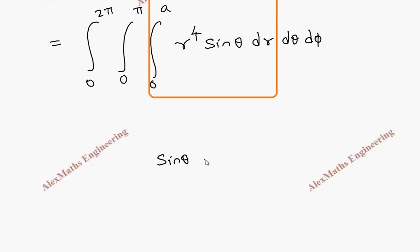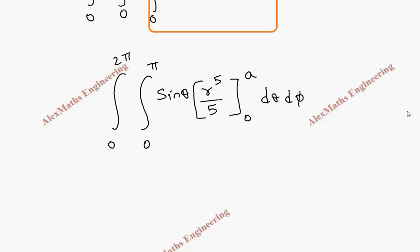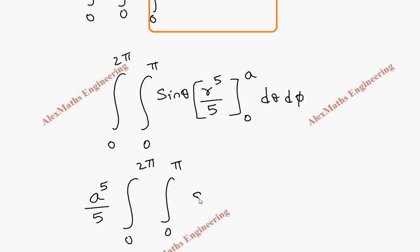The integration of r⁴ is r⁵/5, evaluated from 0 to a. Substituting the upper limit gives a⁵/5, which is a constant that can be taken out. We then have the integral from 0 to 2π and 0 to π with only sinθ remaining, dr dθ dφ.